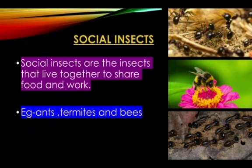Social insects. Social insects are the insects that live together to share food and work. Examples are ants, termites, and bees. Termites are harmful but they live together.